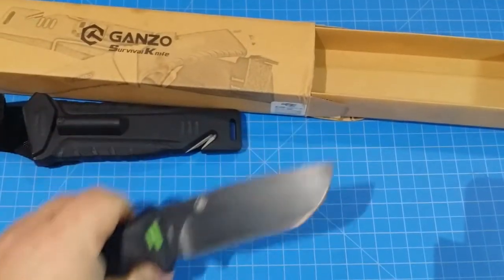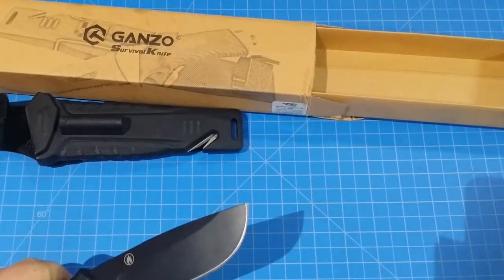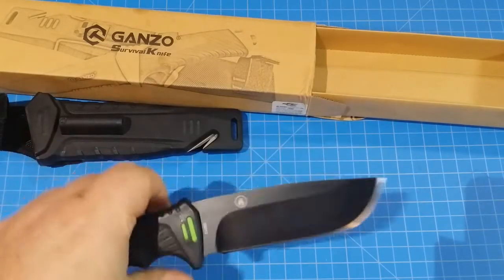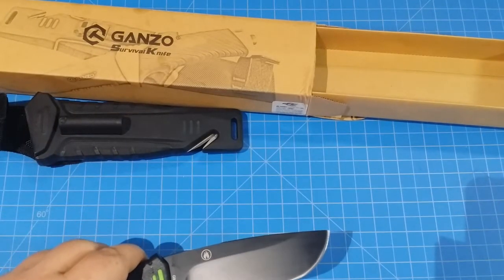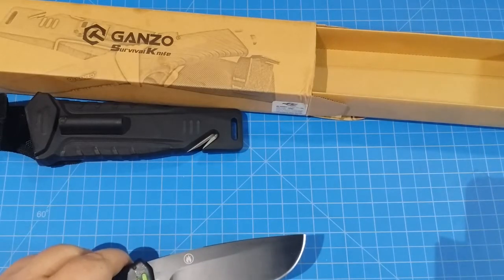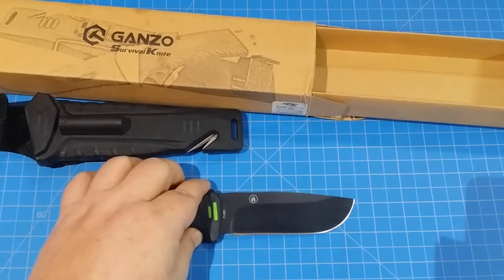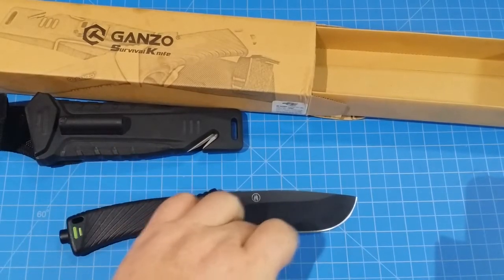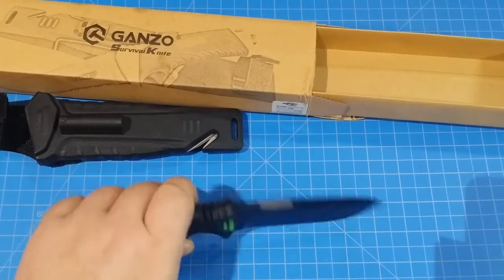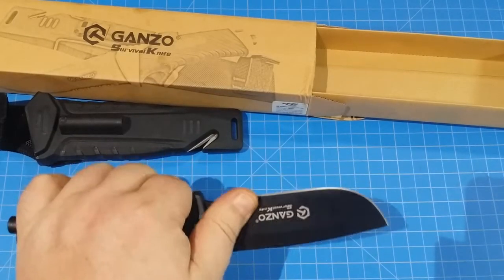So what you got, let's just go through the specs real quick and then I'm going to do some testing on it. Cut a couple things, might take it in the old testing area and see how it holds up. 440C steel on here, should be pretty good. So what we have is about four and a half inches of 440C blade, this black coating on it.